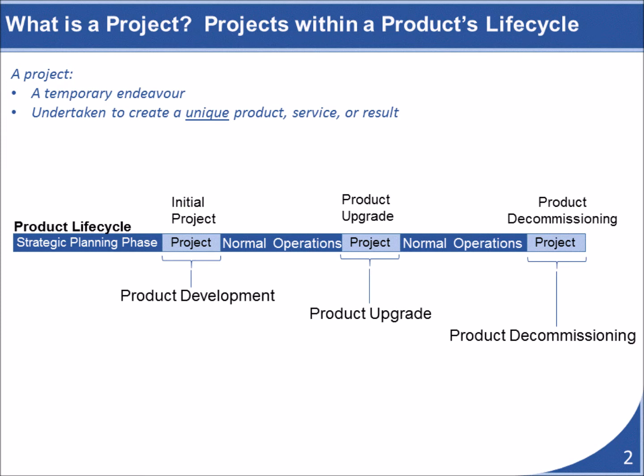But later on, the product that we produce might need to be enhanced or upgraded. This requires another temporary and unique endeavor that would be considered a project. Everything that we do that is a unique undertaking, including shutting the product line down, would be considered a project and would involve activities that are very different from the organization's normal operations.